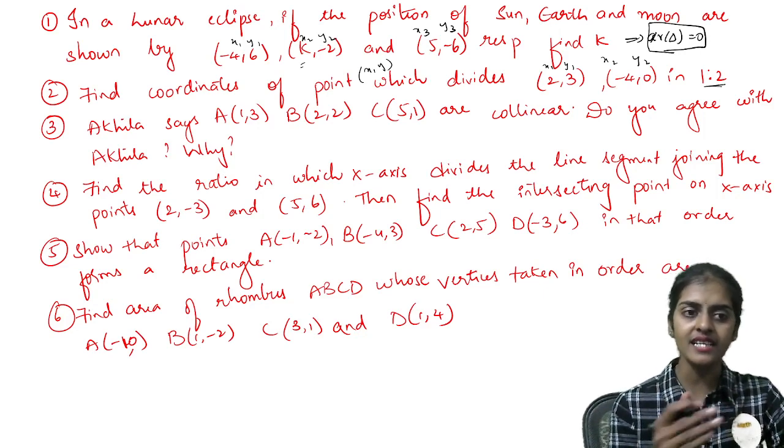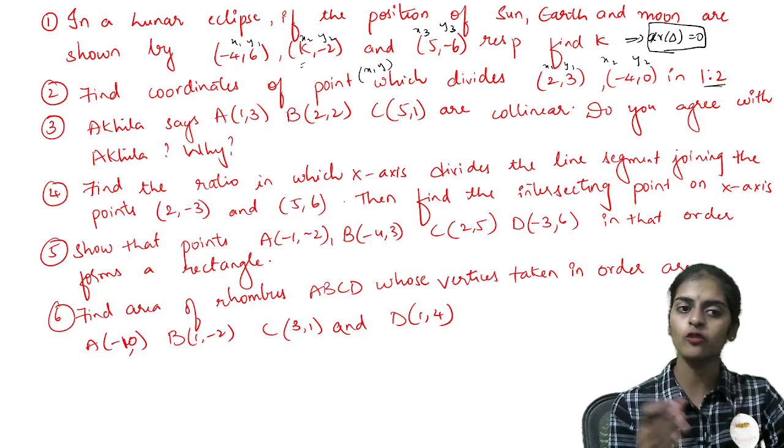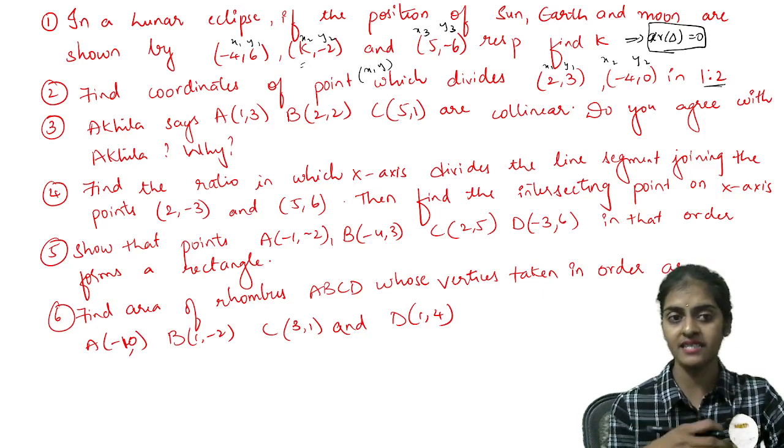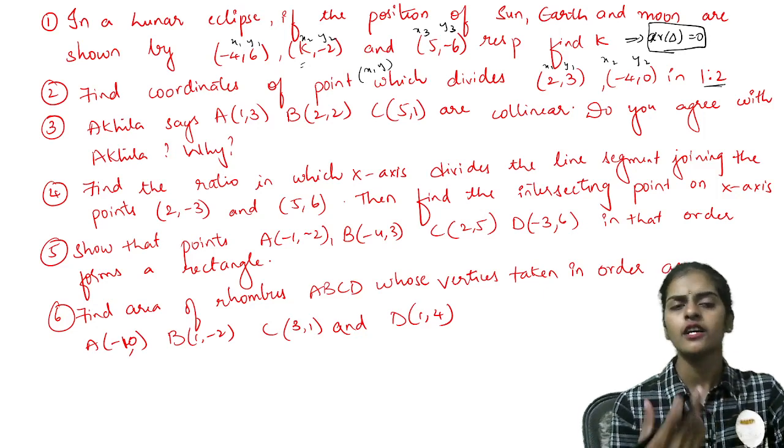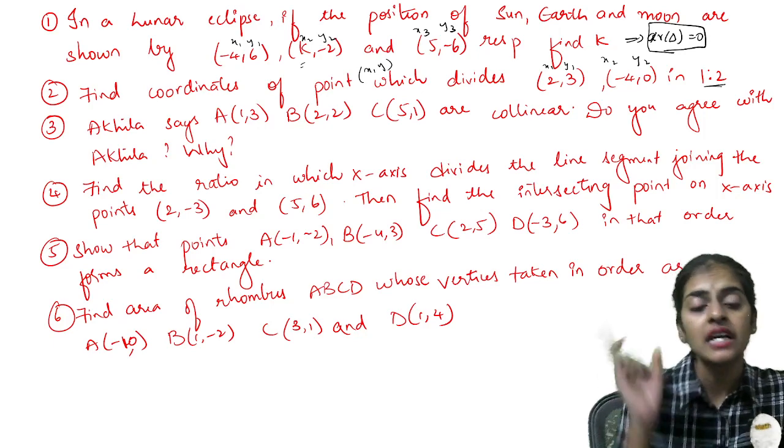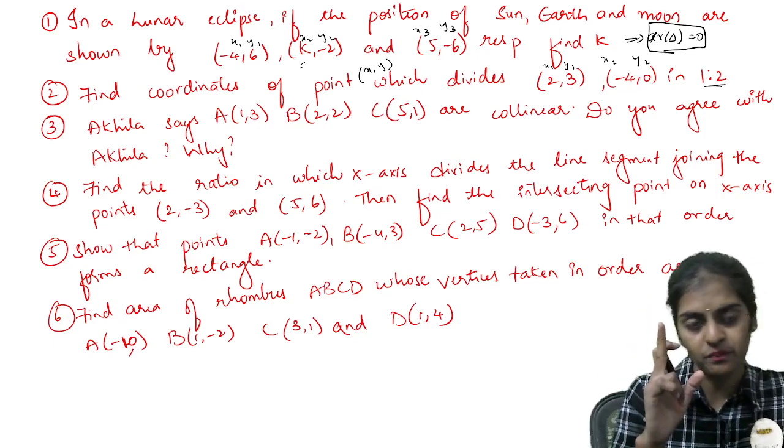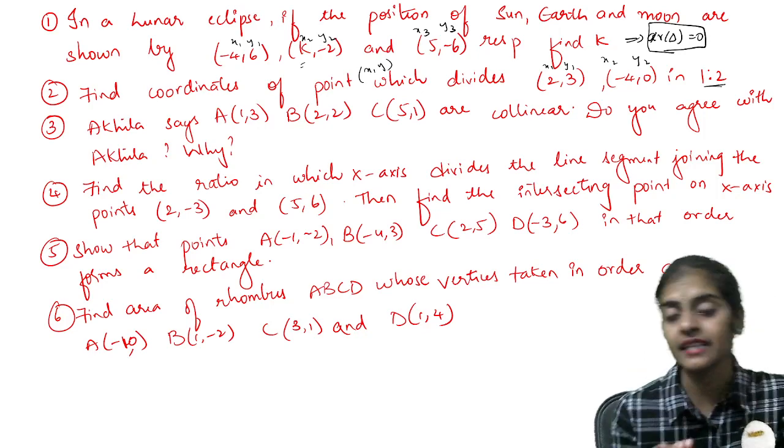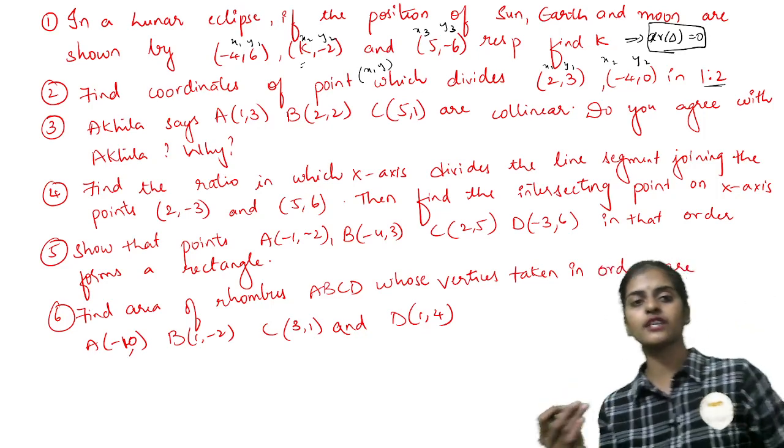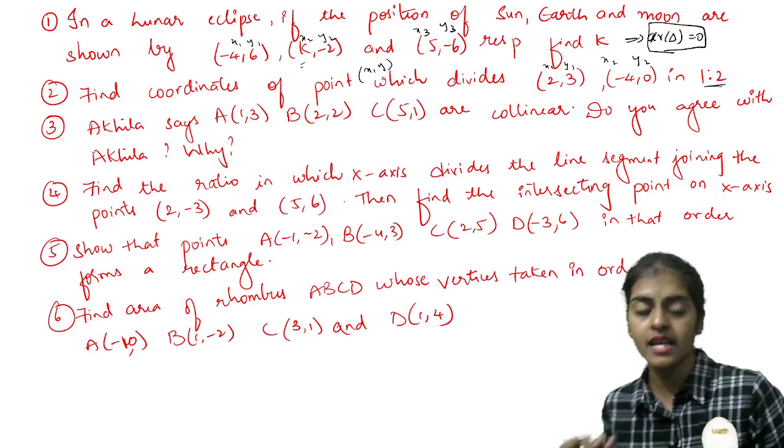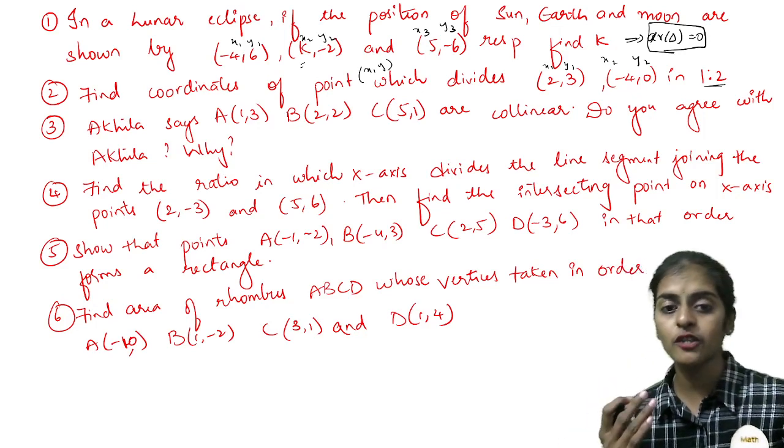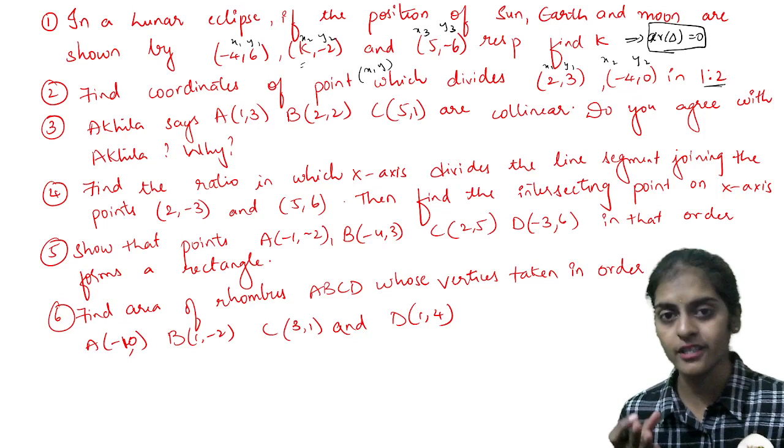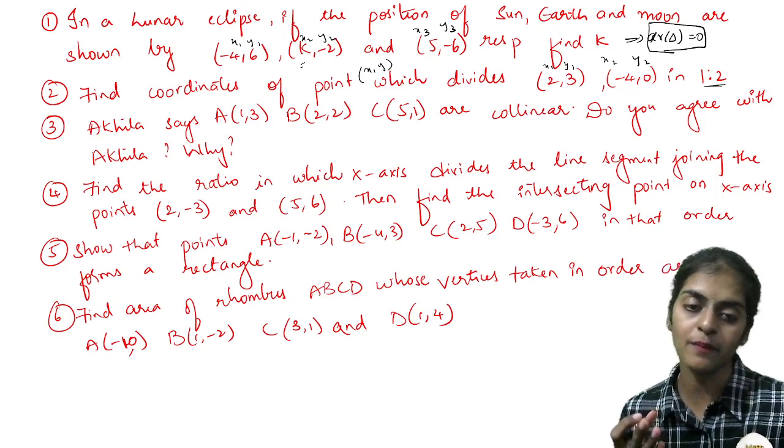Next question, Akhila says A(1,3), B(2,2), C(5,6), D(5,1) are collinear. Do you agree? Again, the same point. If they are collinear, area of triangle should be equal to 0. So here you will prove that area of triangle is 0. Then if you get area of triangle is 0, then you will say that these are collinear points.